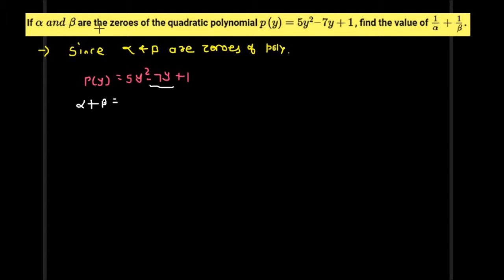Dear students, we can see alpha and beta are the zeros of the quadratic polynomial 5y² - 7y + 1. Find the value of 1/α + 1/β.